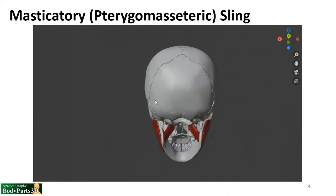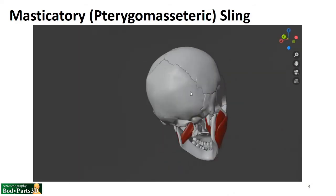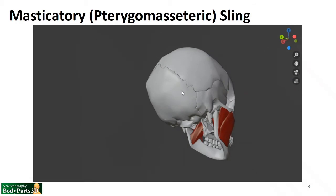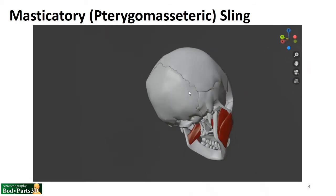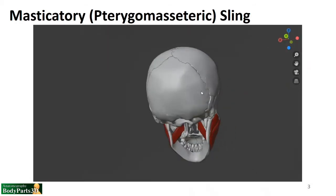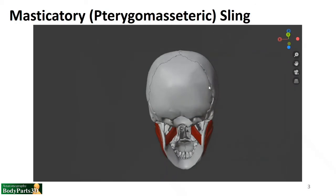The two muscles of the masticatory sling are the masseter and the medial pterygoid. They have a similar attachment on the mandible at the angle and the ramus, and they mirror one another in fiber direction, so many of their actions are shared.